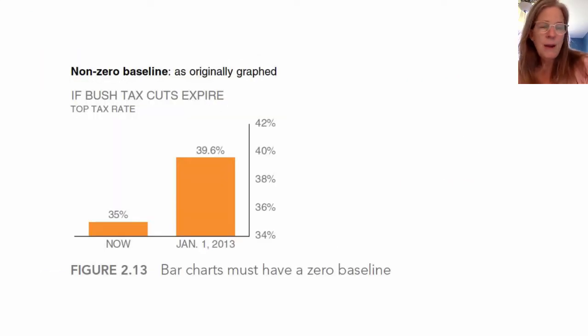Another thing I want to show you is using a non-zero baseline. In this case we look at the tax cuts explained by putting now and then January 1st 2013. If Bush tax cuts were to expire the idea is the tax rates are going to go up. If you just glance at this chart it looks like it's going up a lot, it looks like it's going up four, five, six fold. But that's because the zero line is actually 34 percent.